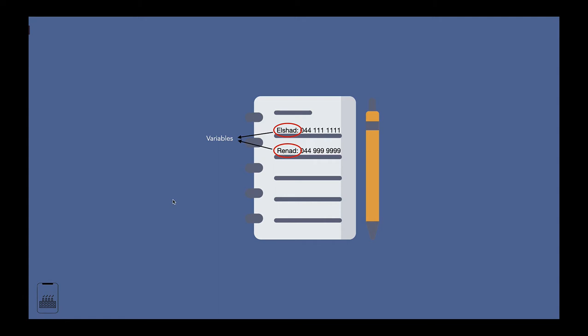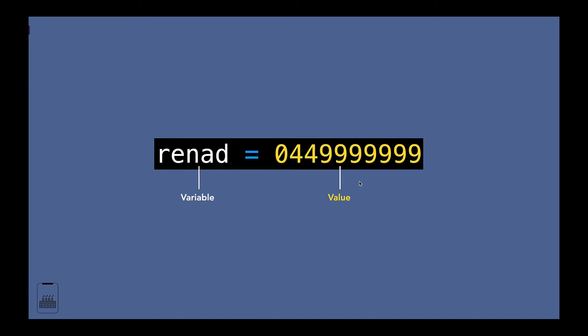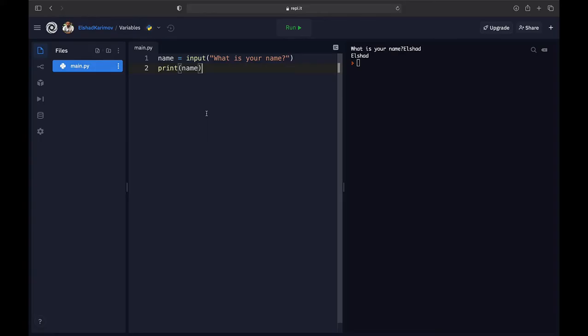In computer science, these names are called variables and the number associated with them is the value. So with the name Renard we can access that piece of data in the future in our program. The variable name in this case is Renard.